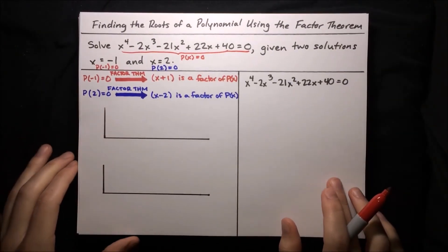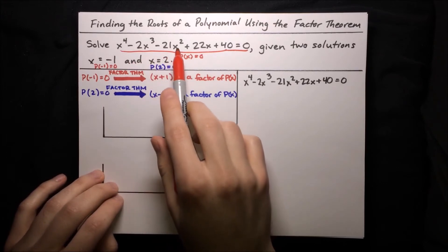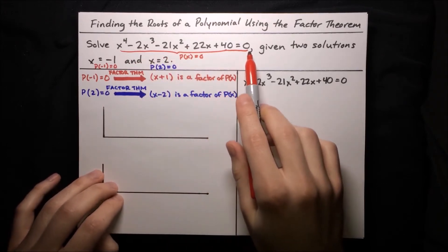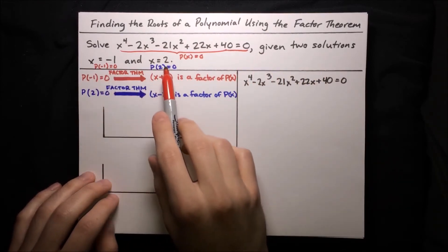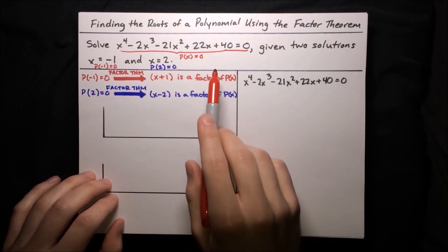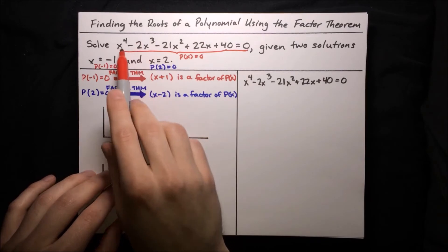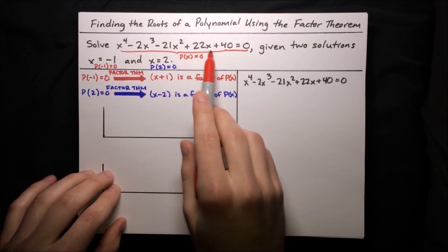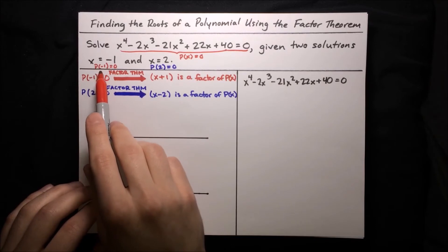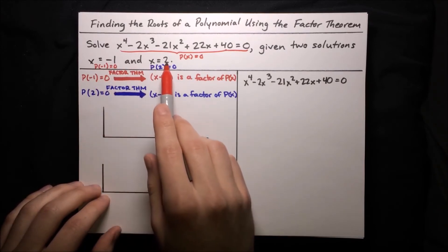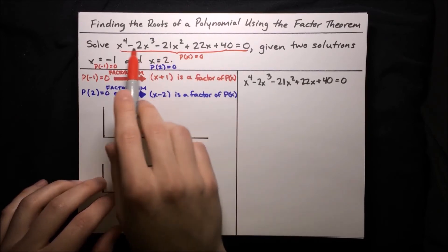Here's another example, pretty similar to the previous one. The difference is that now we have a fourth-degree polynomial: x to the fourth minus 2x cubed minus 21x squared plus 22x plus 40 equals 0. We want to solve this equation given two solutions: x equals negative 1 and x equals 2. We'll let the left-hand side be p of x, so we really just want to find the roots of this polynomial, and we're given two of them.